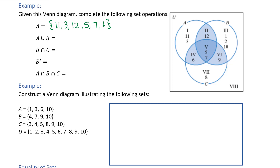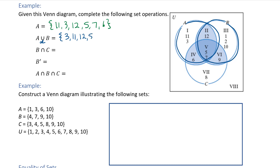The next question is A union B, which means anything in A or anything in B — this is an 'or.' So I list everything in either of those two circles: 3, 11, 12, 5, 7, 6, and also 1, 2, 10, and 9. You can order those however you want as long as you include all of them.